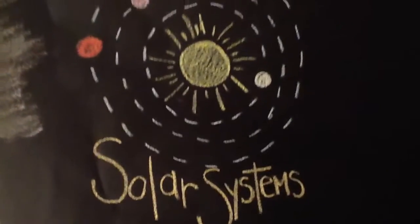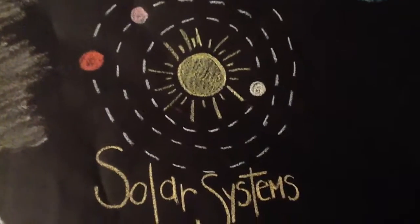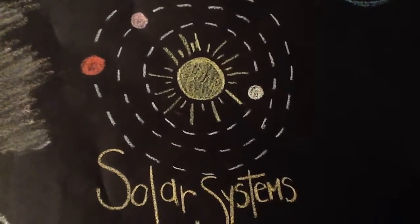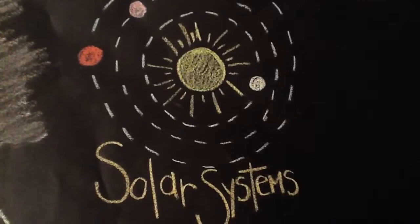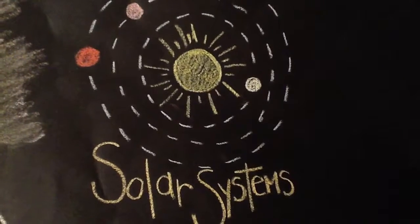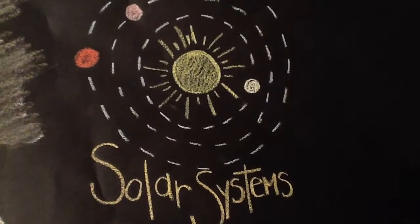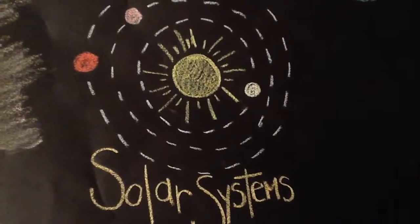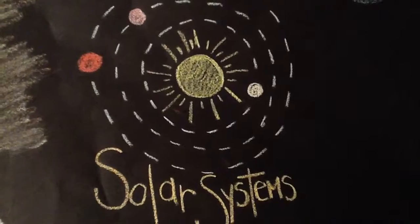Next, we have solar systems. Stars, planets, and moons all together form solar systems. Our own solar system is named after our sun, Sol.